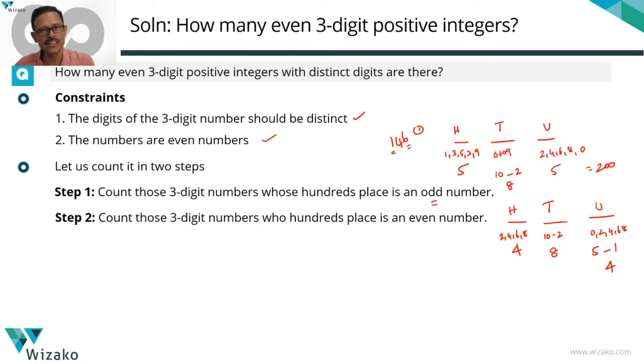So how many such numbers get included in step 2? 4 times 8 times 4. 4, 8 is 32. 32 times 4 is equal to 128. So numbers that start with odd number, hundreds place having an odd number, hundreds place having an even number, it's 200 and 128 respectively. So total of 328 such numbers exist.